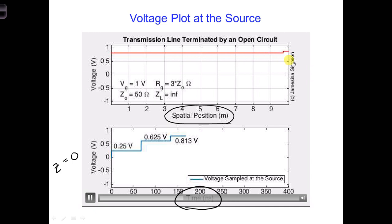Every time the pulse reaches the generator again, there's a sudden change in the voltage at Z equals zero.